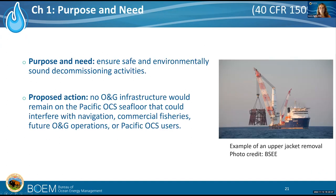Purpose and need: there is a purpose and need in every EA and EIS. For this PEIS, it's necessary to analyze the environmental impacts and safety risks of the decommissioning process and to inform agency decisions in order to minimize impacts and conflicts with other users of the OCS. Government agencies use accurate scientific analysis and focus on what is affected by the government action. The full purpose and need is in much more detail and can be found in Chapter 1.